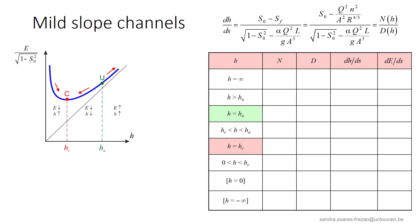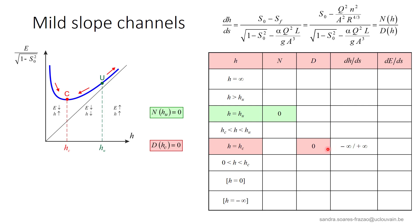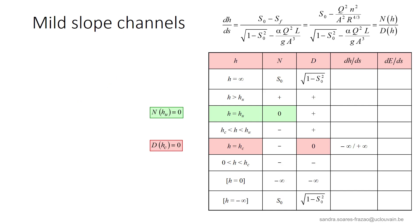Let us first consider mild slope channels. For these channels, hu is larger than hc. So for the whole range of values of h, ranging from minus infinity to plus infinity, we will analyze the evolution of the water depth and fill this table. We know that the numerator becomes 0 for hu, and the denominator becomes 0 for hc. From there, we already know that the water profile will have a slope normal to the bed for this depth, which is only a theoretical result and is not in line with the assumption of parallel flow.